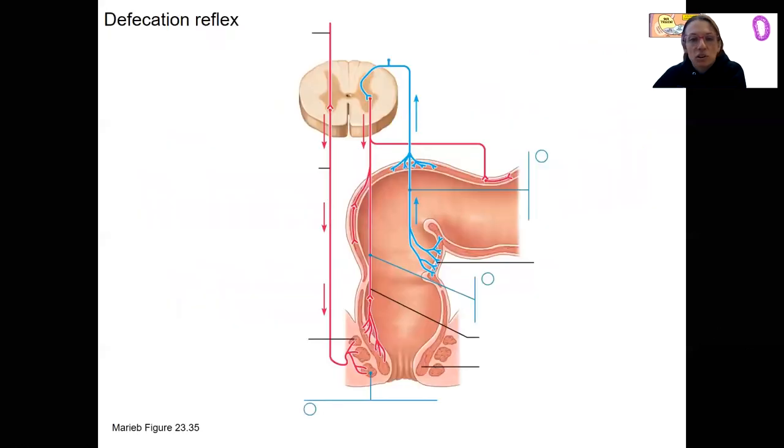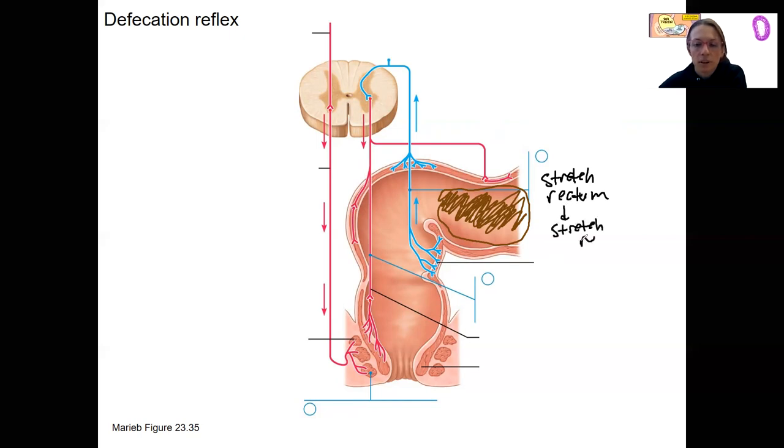Let's look at this defecation reflex. Step one is our feces are going to enter the rectum. That's happening here. Let's actually add a little detail here. Here is a feces. And when that feces enters this area right here, that's going to stretch the rectum. This is the stimulus detected by stretch receptors, sensory receptors in the rectum that carry afferent information via the nervous system to the central nervous system.